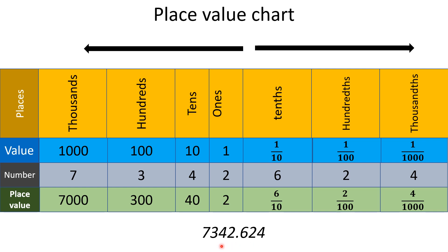It is the way to read a decimal number. In this number, we can easily see that 7342 is the whole number part, the point is the decimal point, and 624 is the decimal part. So we read it as 7342.624. Always remember, we read it as 7342.624. Reading it as 7342.624 in any other way is wrong — absolutely wrong. The right way is 7342.624.